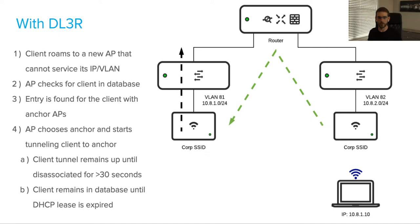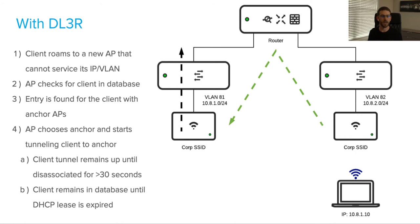That tunnel will be established as the client roams to different APs in the new service set. It will be tunneled back to the original anchor access point as long as that session stays up and does not disassociate for more than 30 seconds. If it does disassociate for more than 30 seconds, we assume that device has gone to sleep or is doing a longer roam — maybe it's been powered off or manually disassociated. In that case, a fast roam or seamless layer-2 type roam is no longer needed, and so we can remove that tunnel. If that client does reassociate, it's going to get a new anchor and a new client entry in the database once it initially associates.